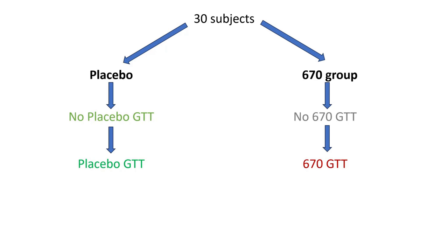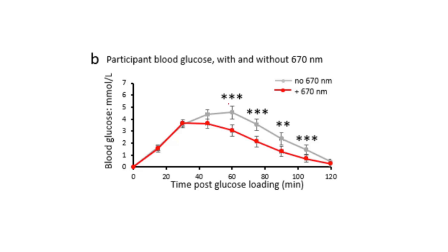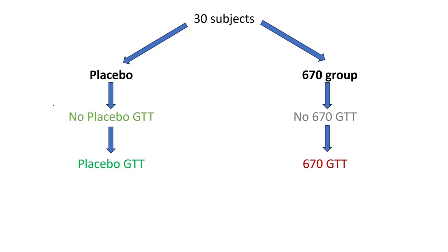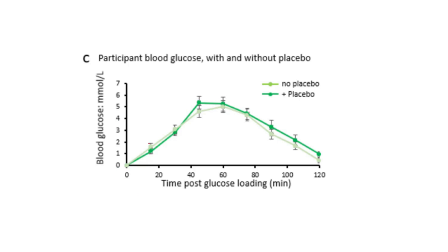Looking within the 670 group — comparing the regular glucose tolerance test alone versus when the light was strapped on and turned on — there were again statistically significant differences. The 670 light was very beneficial compared to when that same group did not use it. And comparing the placebo group without the device versus with the device strapped on but turned off, there was no statistical difference at all — none of those points were statistically significantly different from one another.